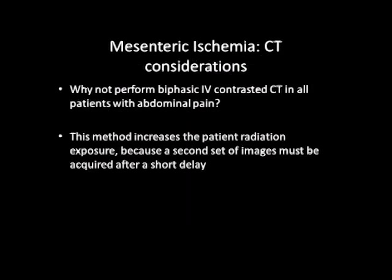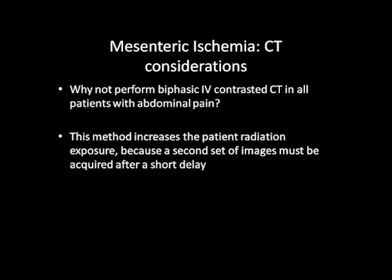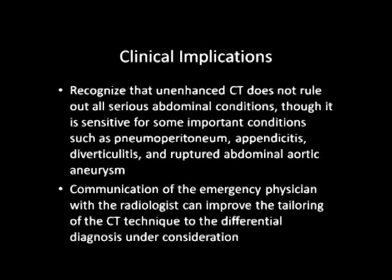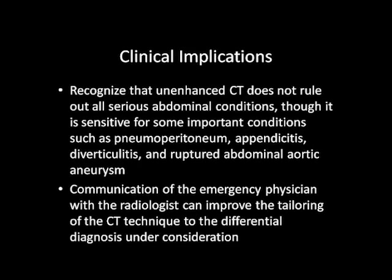Why not perform biphasic IV contrasted CT in all patients with abdominal pain? This method increases patient radiation exposure because a second set of images must be acquired after a short delay. Consequently, it should not be used universally when mesenteric ischemia is not suspected. Recognize that unenhanced CT does not rule out all serious abdominal conditions, though it is sensitive for some important conditions such as pneumoperitoneum, appendicitis, diverticulitis, and ruptured abdominal aortic aneurysm. Communication between the emergency physician and radiologist can improve the tailoring of CT technique to the differential diagnosis under consideration.